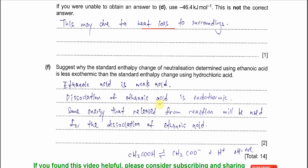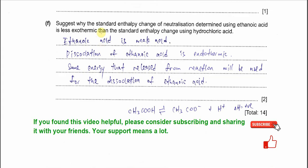Part f: suggest why the standard enthalpy change of neutralization using ethanoic acid is less exothermic than using HCl. Ethanoic acid is a weak acid, meaning one mole of it does not fully ionize to form one mole of H⁺. The ionization of ethanoic acid is endothermic — it absorbs heat. Therefore some energy released from the neutralization reaction is used for the dissociation of ethanoic acid, resulting in less heat being measured overall.